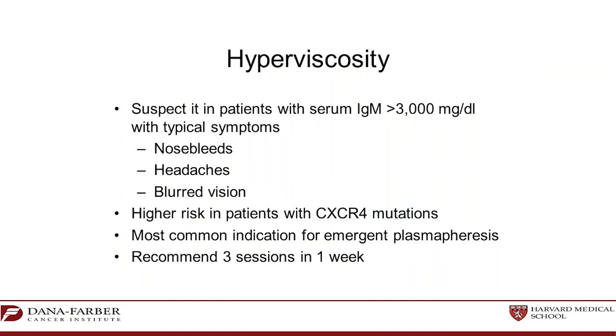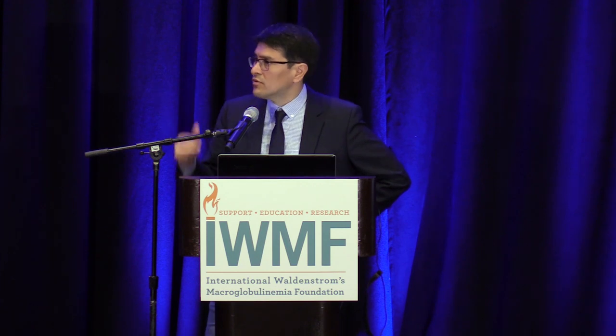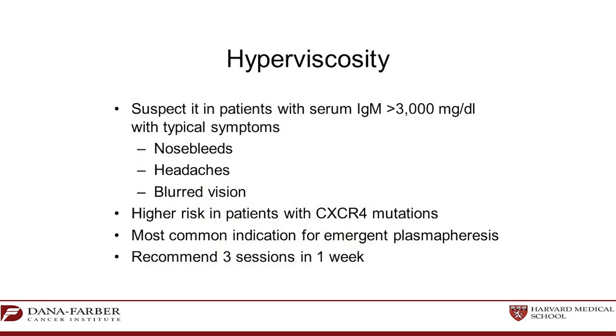Hyperviscosity syndrome is characterized by a number of clinical issues. The classic presentation includes nosebleeds — because the vessels in the nose are very thin and more exposed to temperature changes, so the IgM and viscosity can block and burst these small vessels. Headaches can also happen because of sluggishness of circulation in the brain, and blurred vision can occur because of changes in the retinas, ranging from thickening of vessels all the way to hemorrhaging in the retinas.